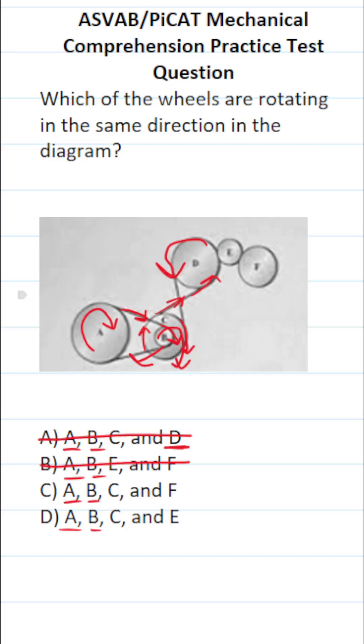And D, of course, is spinning this way, which means it's going to spin wheel E this way. That is in the same direction as A, B, and C. So by process of elimination, we know the correct answer is going to be D.